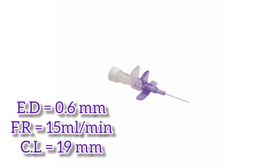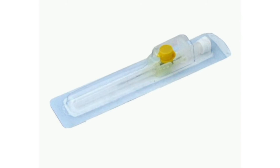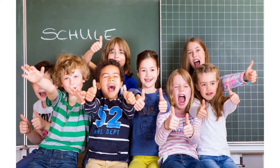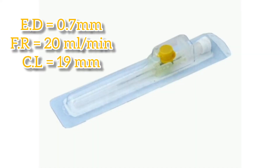Its catheter length is 19 mm. Next is the yellow colored cannula having a gauge of 24. Its external diameter and flow rate are more than the purple one since its gauge is less than 26. It is used in infants, toddlers, and older children. Its external diameter is 0.7 mm and the flow rate is 20 ml per minute. Its catheter length is also 19 mm.